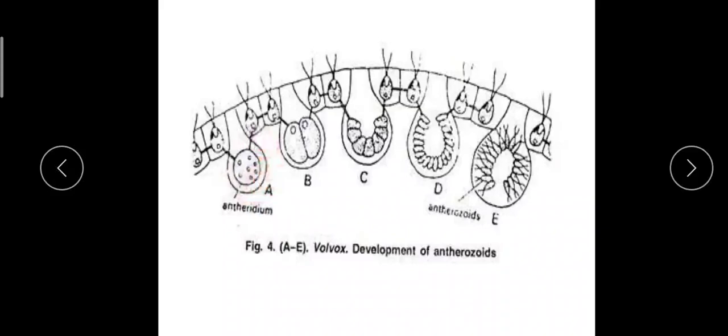The cell is called gonidia. The protoplast of gonidia undergoes division in the longitudinal plane and divides to form a number of protoplasts. The number may range from 16 to more than 500, and the number differs in different species of Volvox. These protoplasts get arranged into a plachia, as found in asexual reproduction.